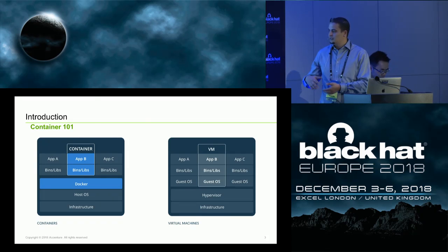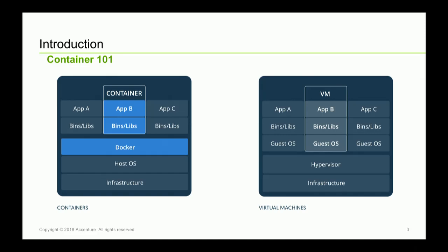The downside of VMs is that they're very heavyweight and require a lot of resources. On the other end of the spectrum, you have containers — they're more lightweight. Docker is the most famous one, but under the hood there's LXC and a bunch of other containerization technologies. The biggest difference is that you can have a host that shares the kernel with multiple containers, with isolation handled through namespace isolation and memory space isolation.